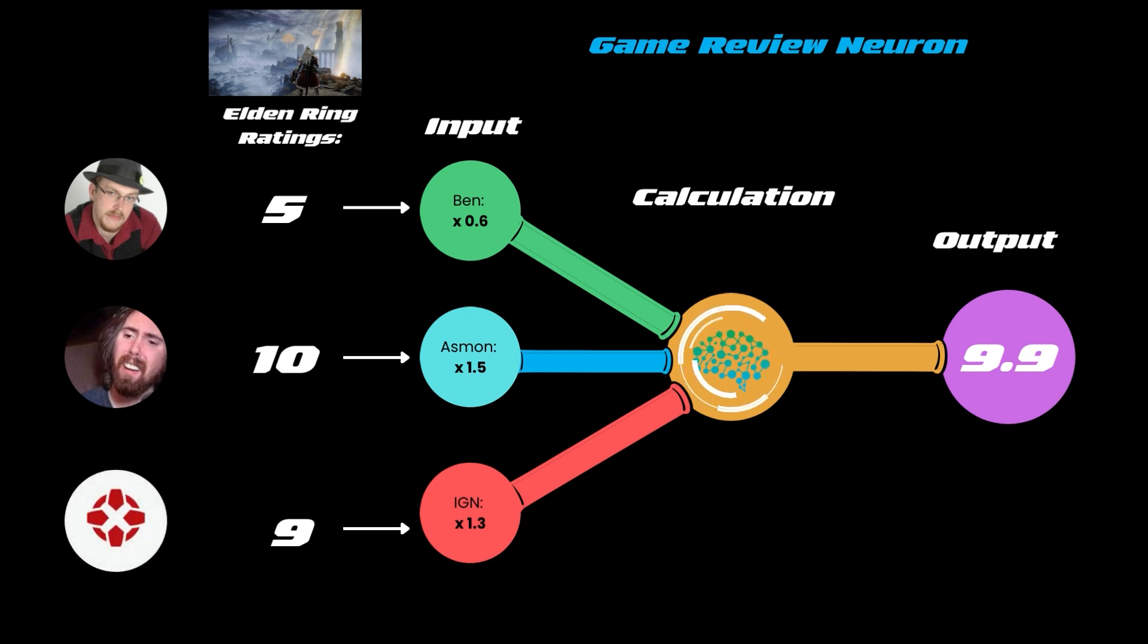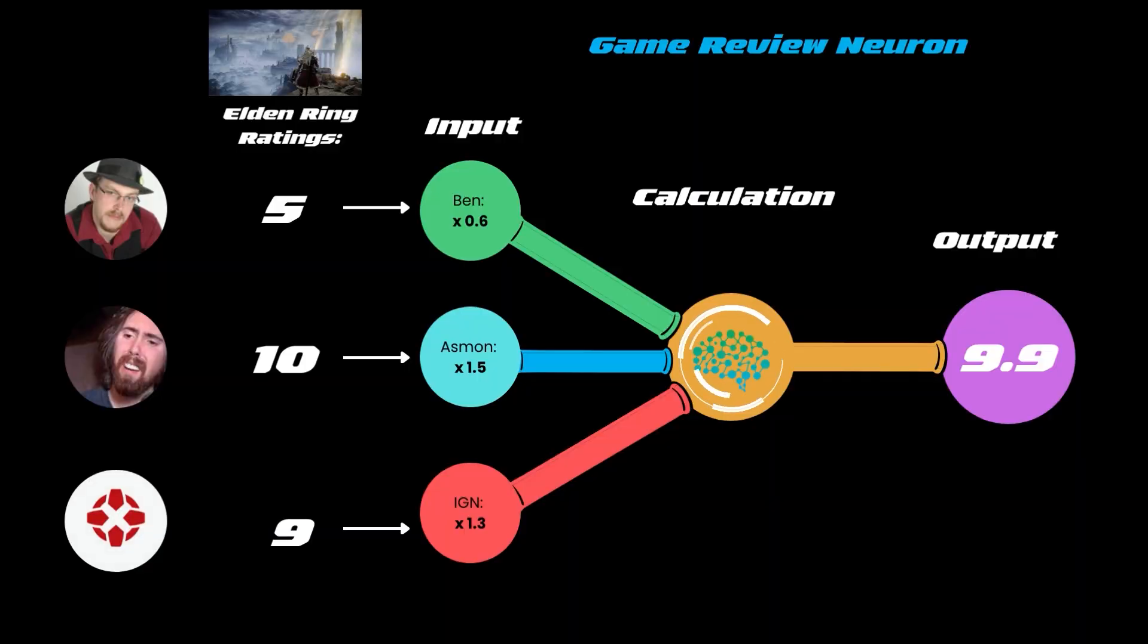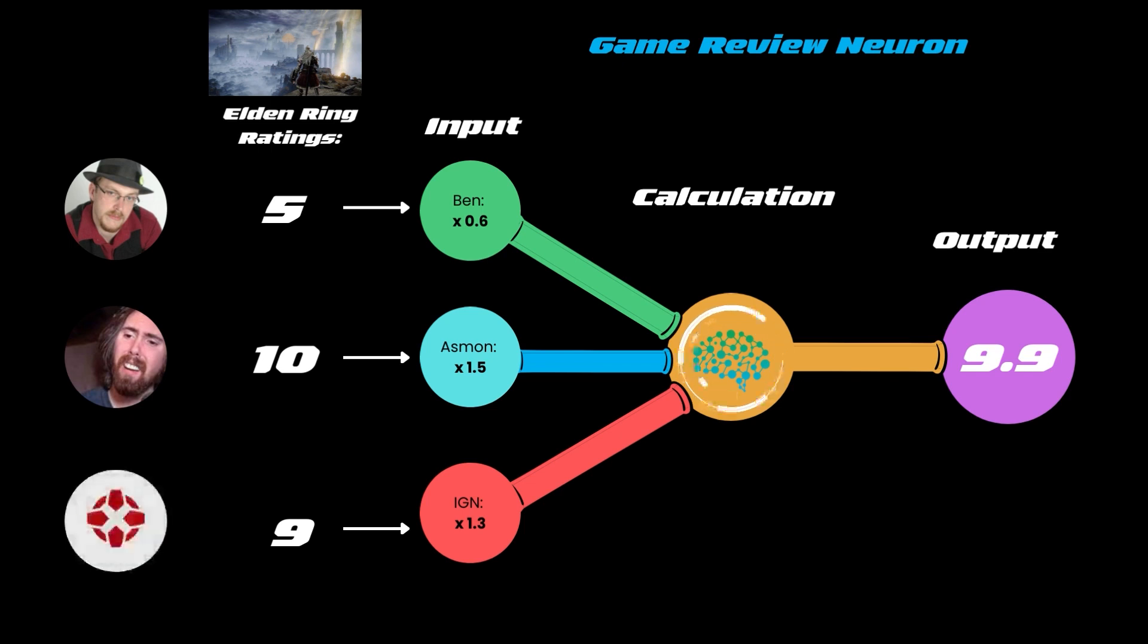And as we can see from the output, even if Ben gave Elden Ring a lower score, because he lost weight and impact in his prior review, the neuron almost ignores his score and gives the game a rating mostly based on Asmongold and IGN's scores.